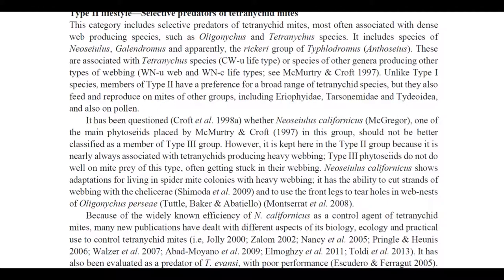Type 2 predators are a little more tricky. This category includes selective predators of tetranychid mites, most often associated with dense web-producing species such as Oligonychus and Tetranychus. It includes the genera Neoseiulus, Galendromus, and apparently the Rickeri group of Typhlodromus. Unlike Type 1, Type 2 predators have a preference for a broad range of tetranychid species, but they also feed and reproduce on mites of other groups like Eriophyidae, Tarsonemidae, and Tydeoidea, and also on pollen.